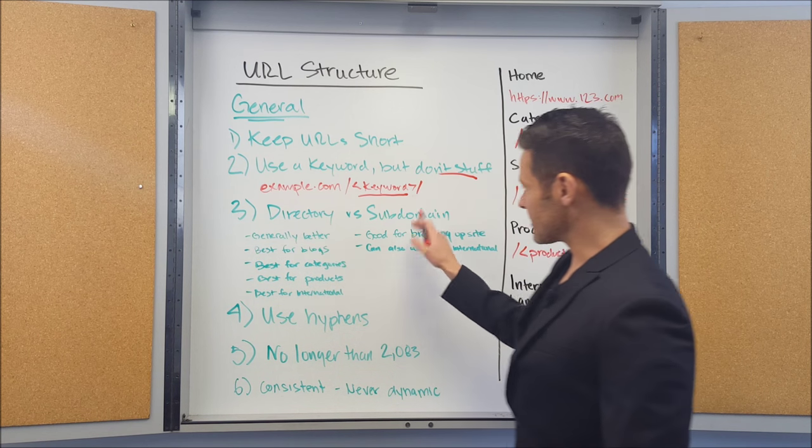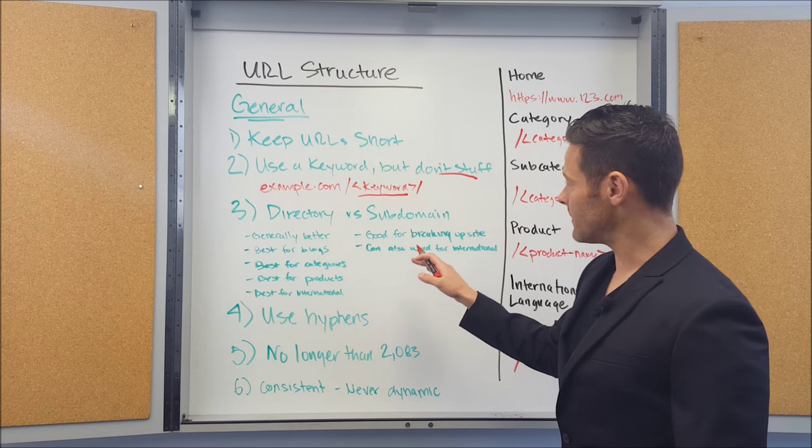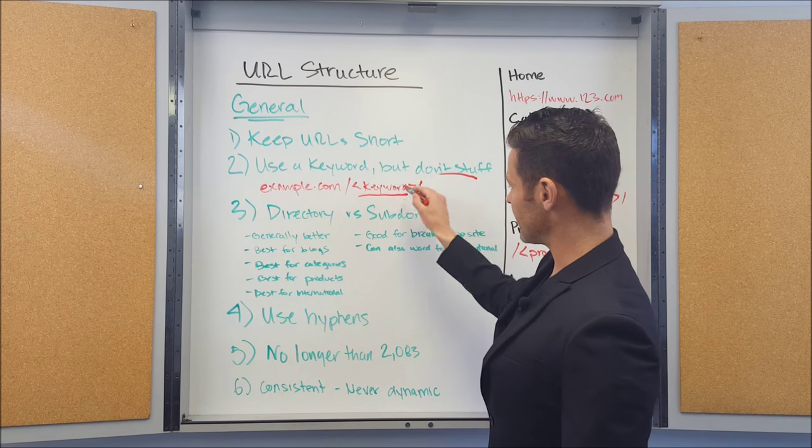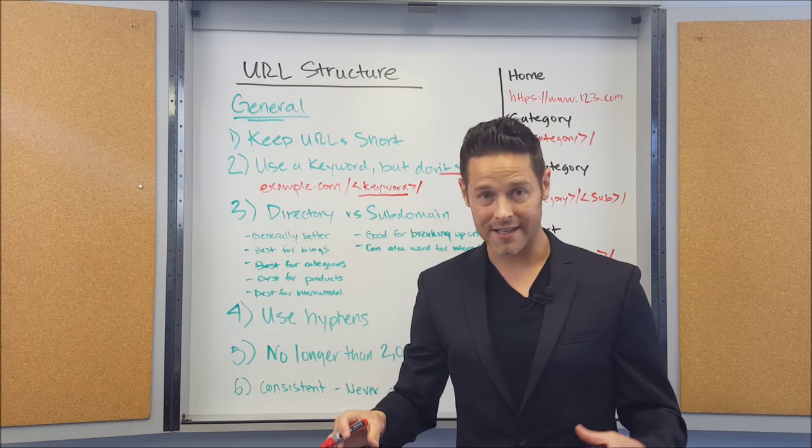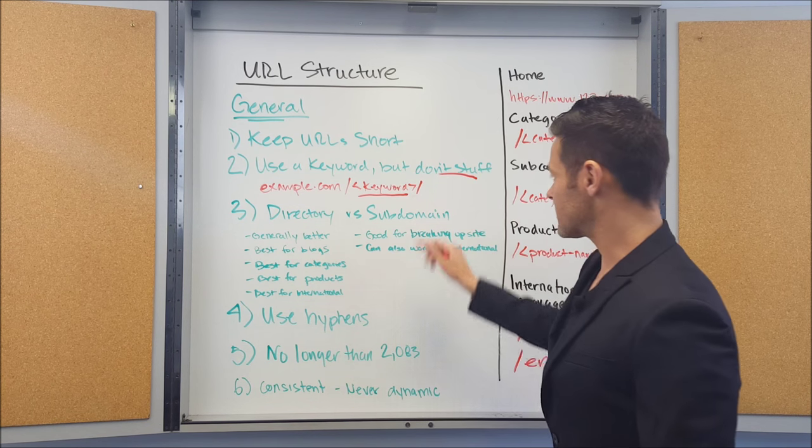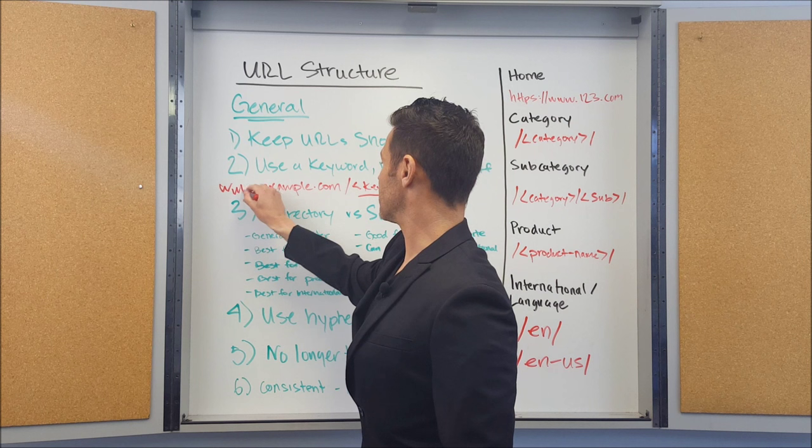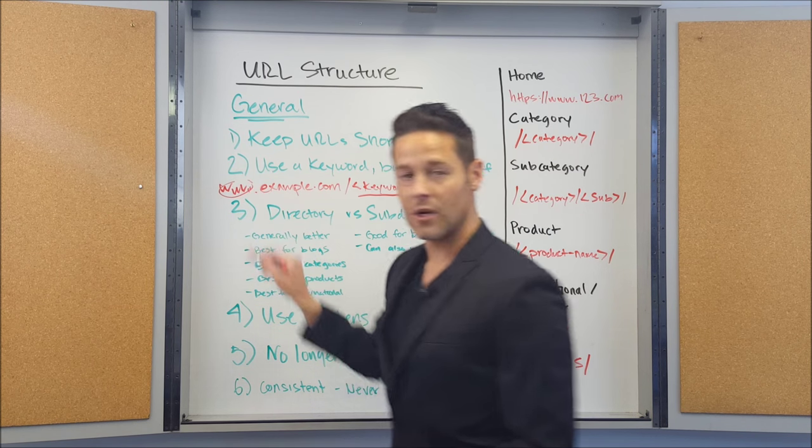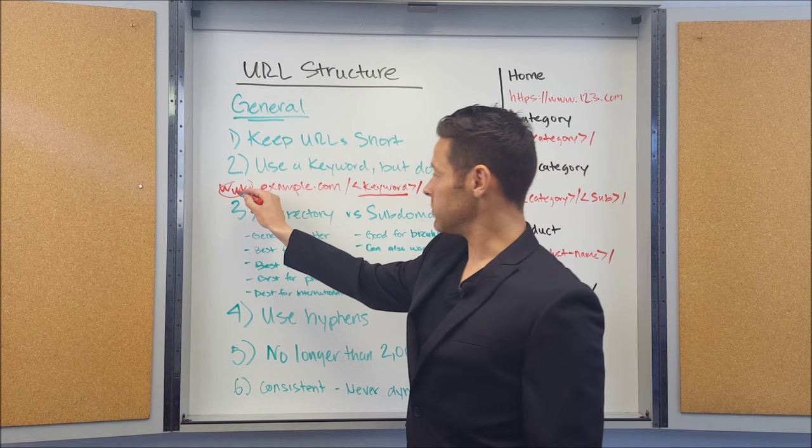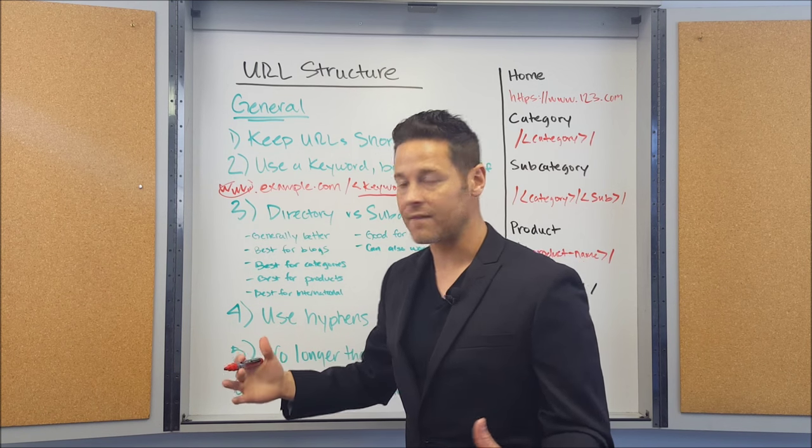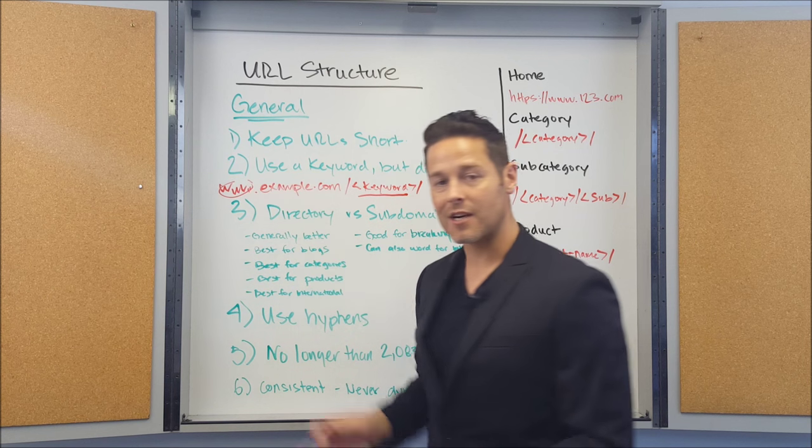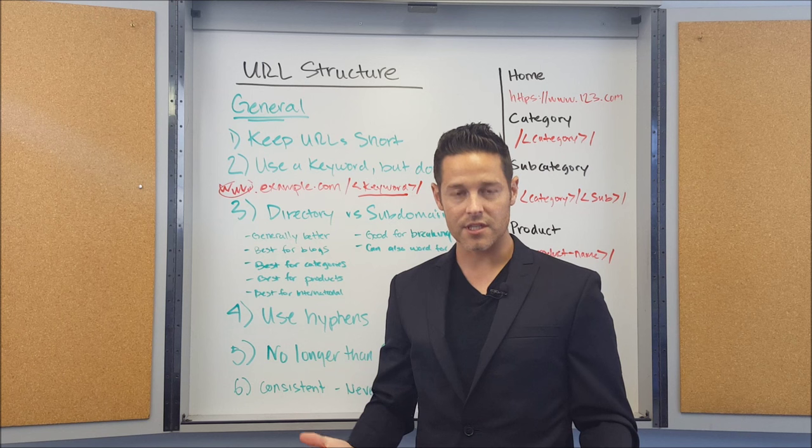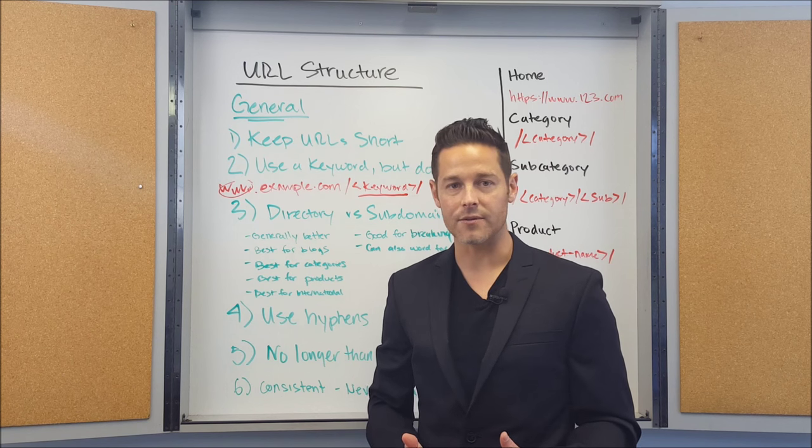There's something called a directory structure and something called a subdomain. A directory is after example.com forward slash right here. The keyword right here would be a directory on example.com. A subdomain would be www.example.com. So the www would be a subdomain. So if it was blog, if it was whatever.example.com, whatever comes before the example is a subdomain. So you really need to know how to use subdomains and how to use directories.